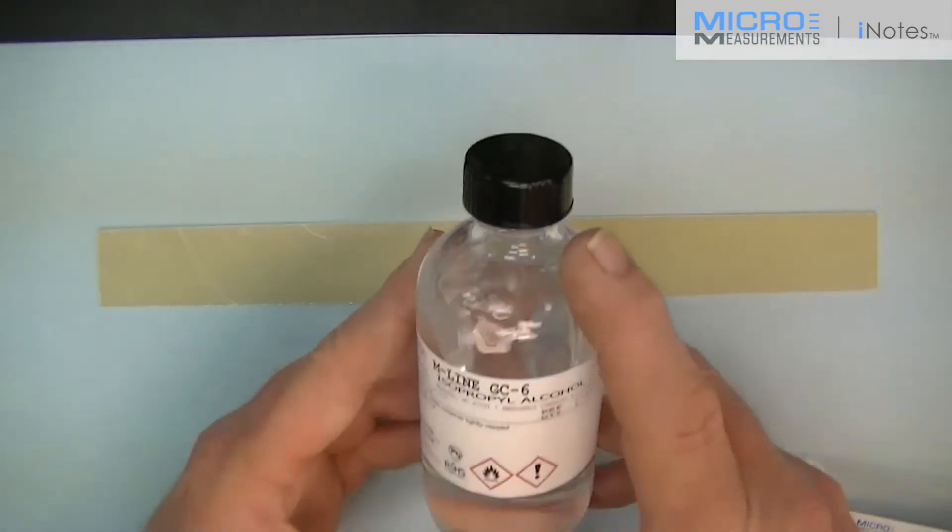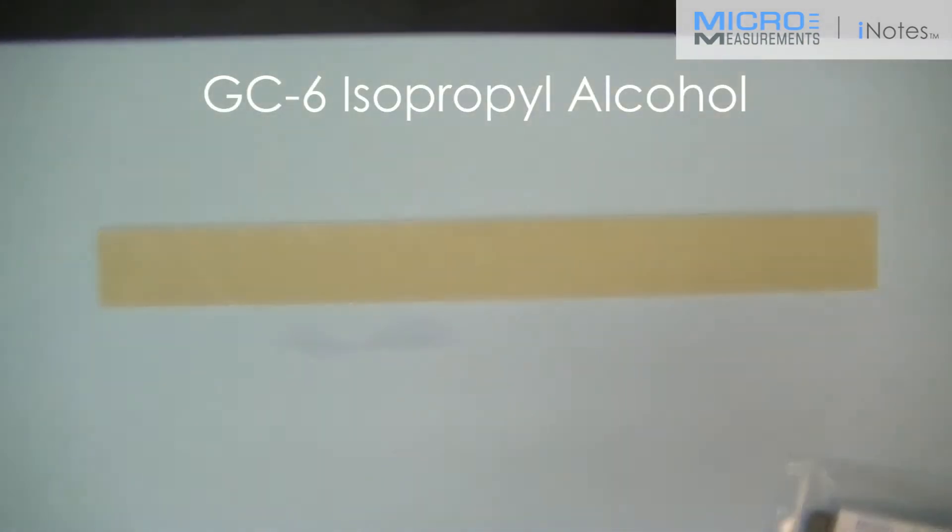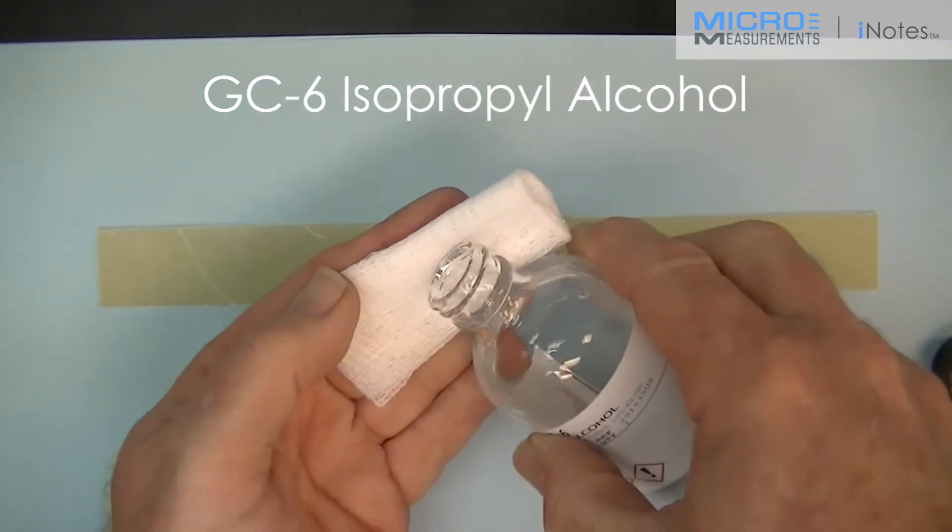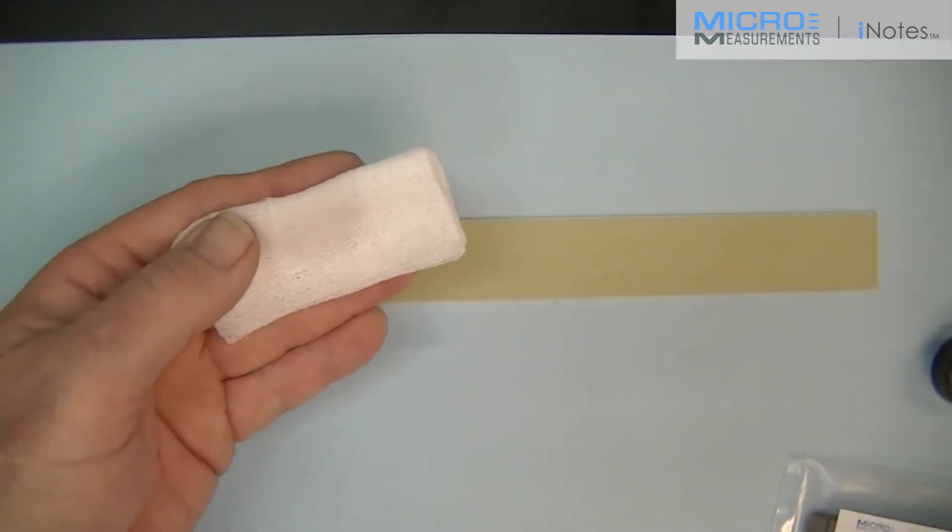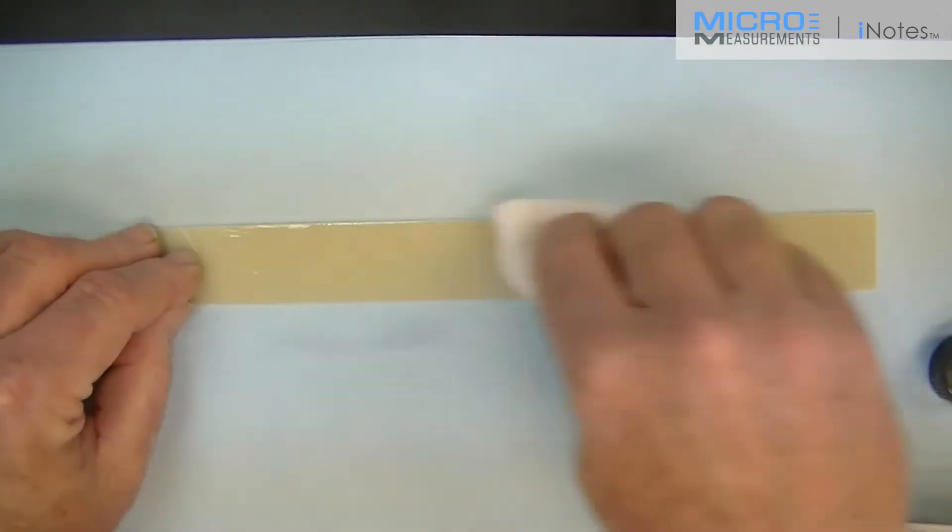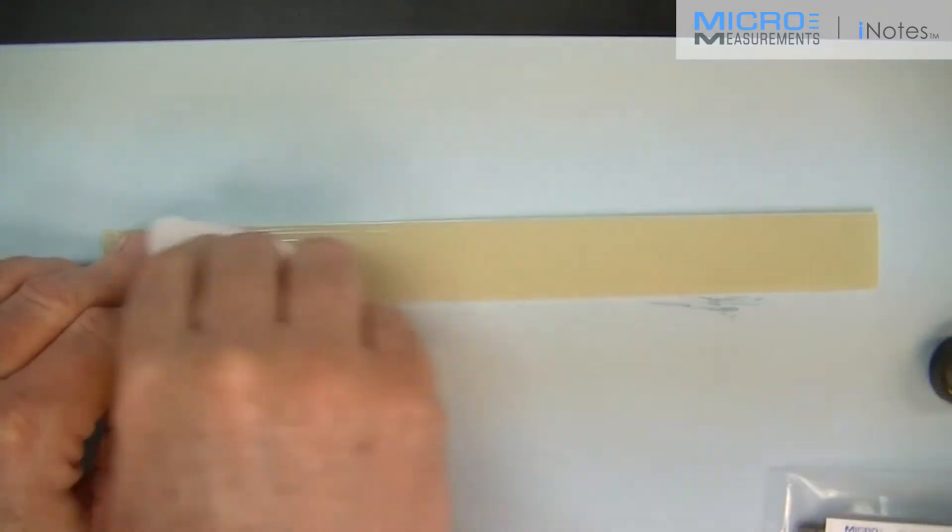The first step is to degrease. We're going to locate the GC6, the isopropyl alcohol. Because this is a plastic specimen and could be damaged by some of the stronger solvents, the GC6 or isopropyl alcohol is an excellent choice to avoid damage to your part. I'm going to soak the gauze sponge and then degrease the top surface of my beam.